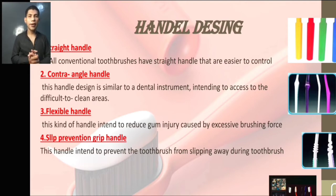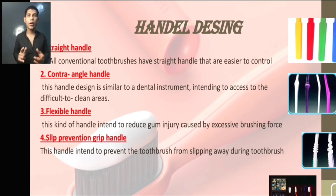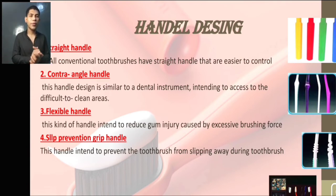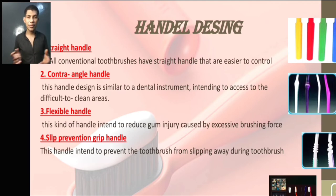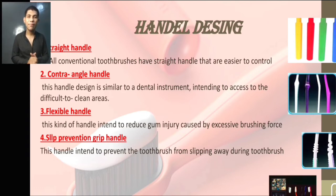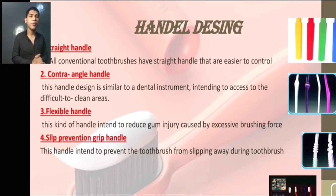Handle design: the straight handle — all conventional toothbrushes have a straight handle that is easy to control. The contra angle handle is designed similar to a dental instrument, intended to access difficult-to-clean areas. The flexible handle is designed to reduce gum injury caused by excessive brushing force. The slip prevention grip handle prevents the toothbrush from slipping away during brushing.